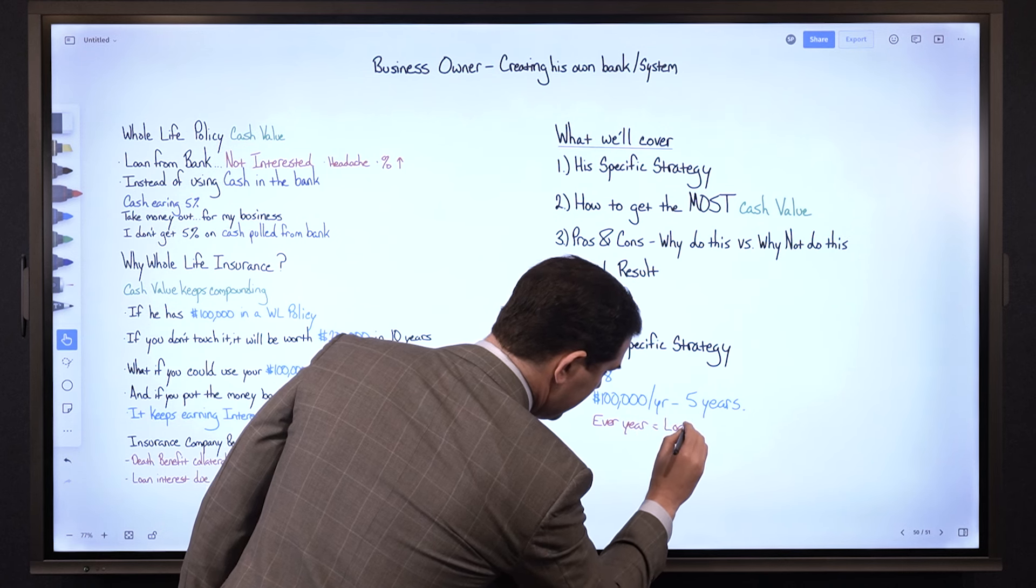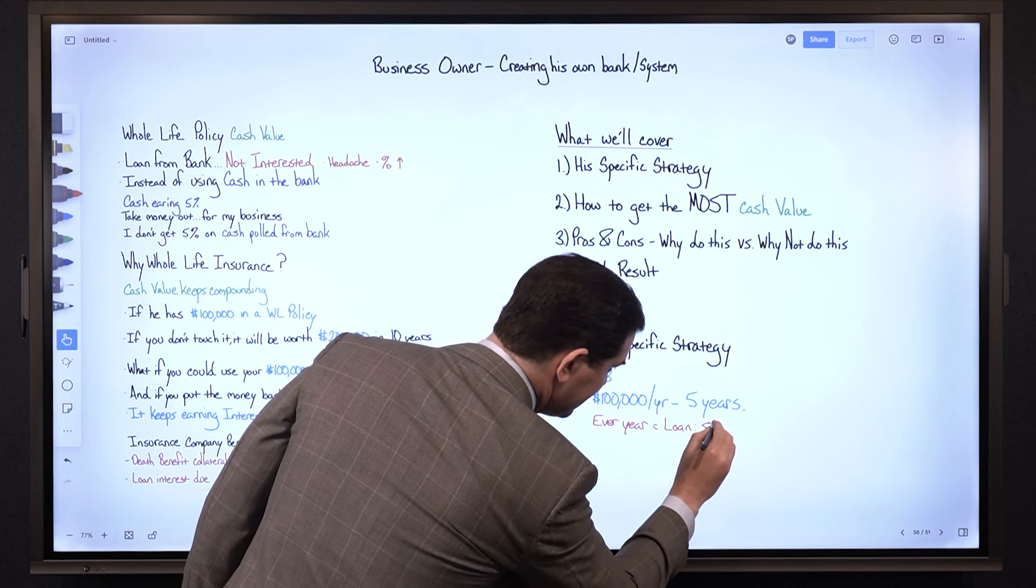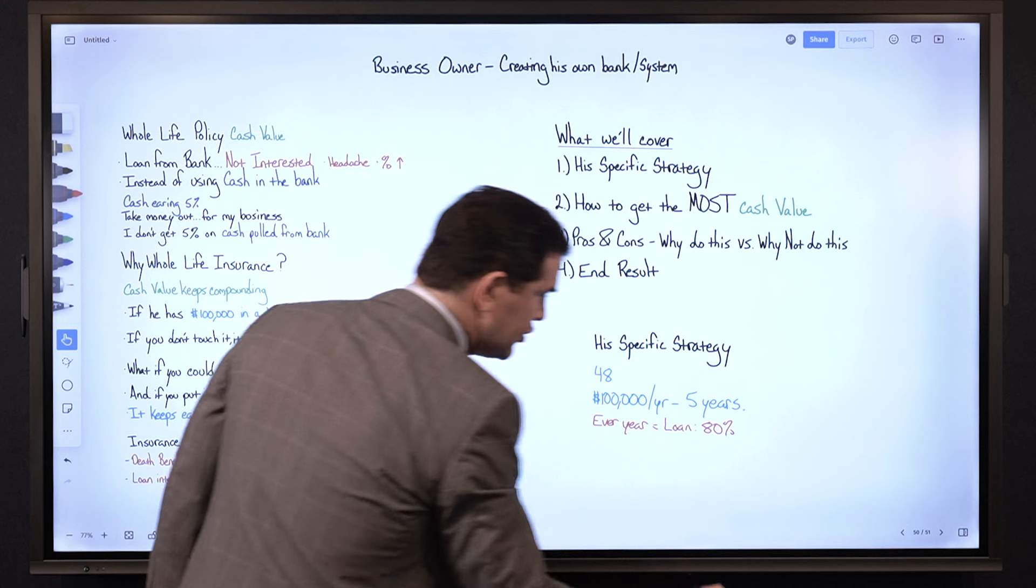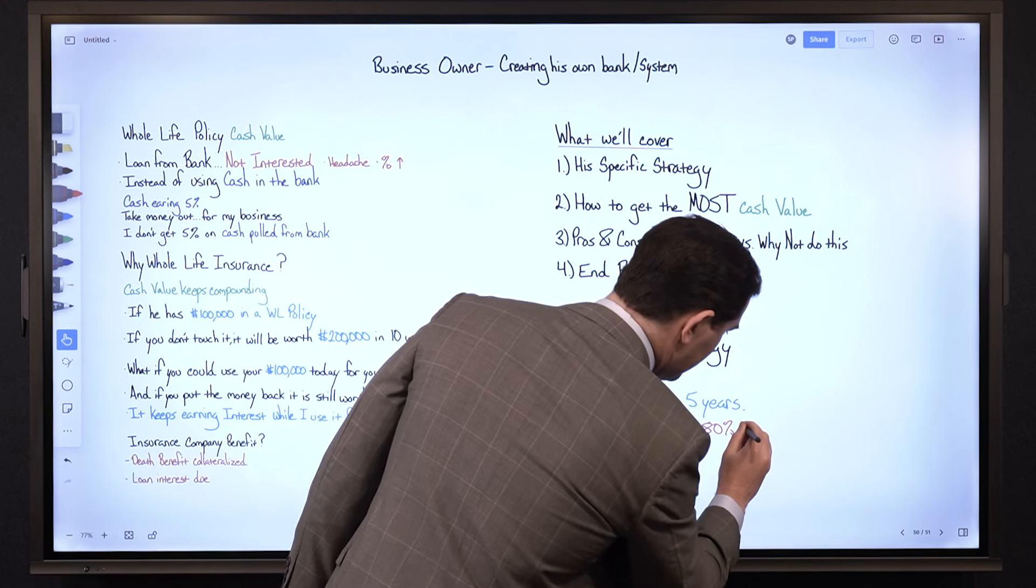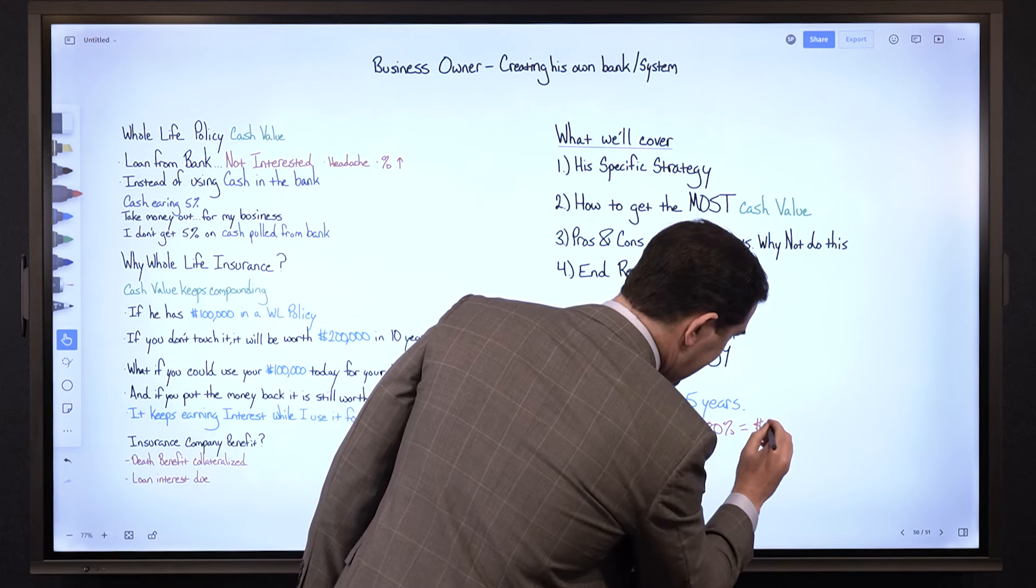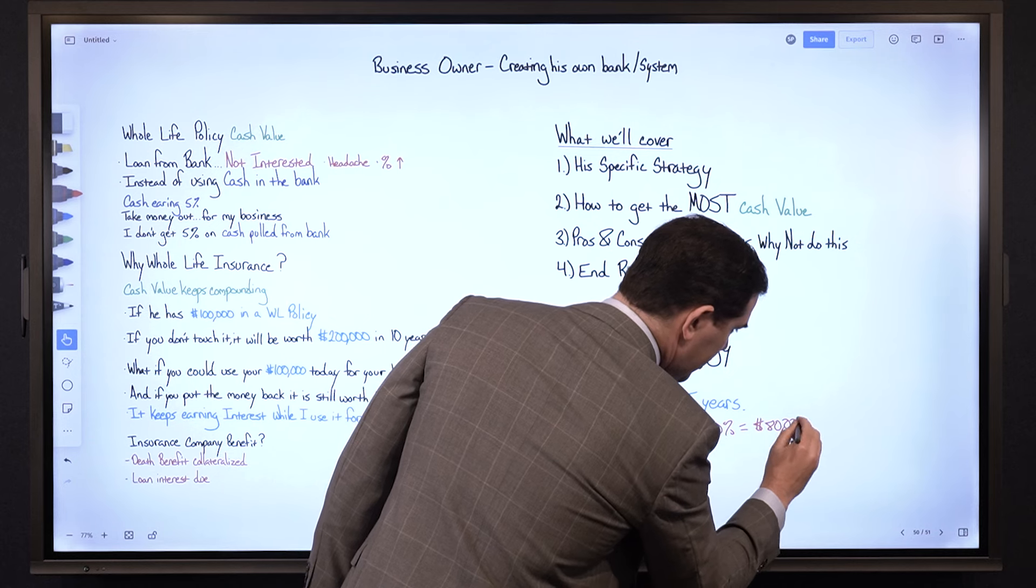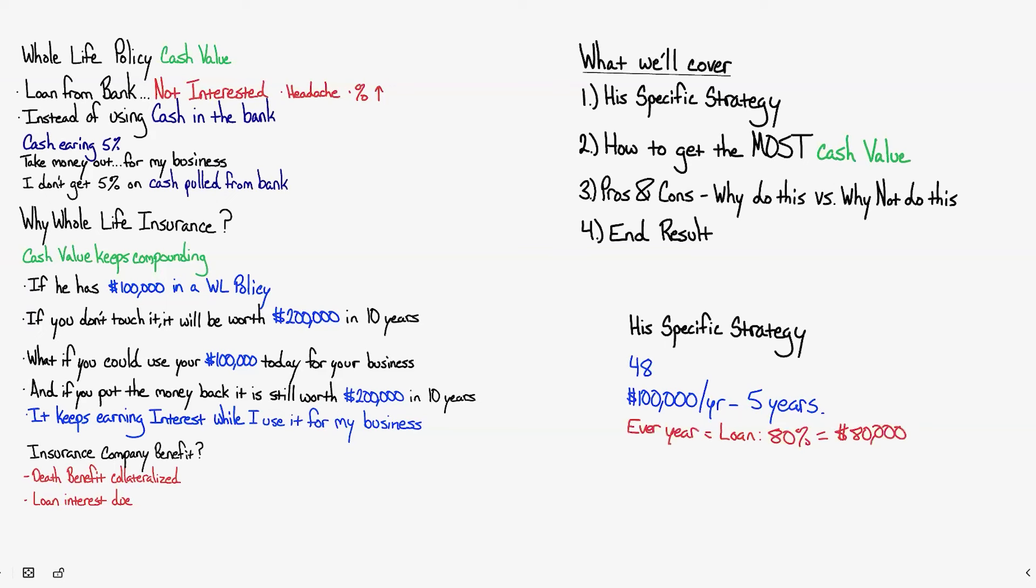Every year he's going to borrow 80%. So if he puts in $100,000, 80% is what? $80,000. So he's going to loan the majority of what he pays into the policy and he's going to do that for five years. So he's going to pay in how much? $500,000 total. He's going to loan out how much? Eight times five. $400,000.